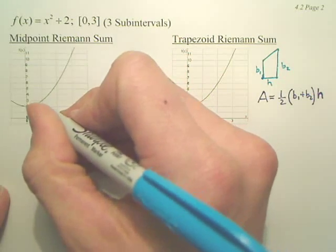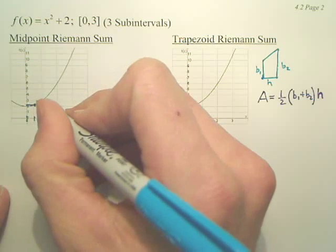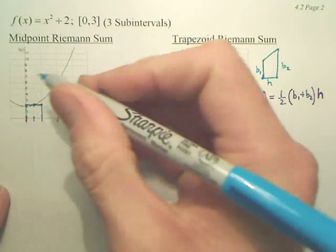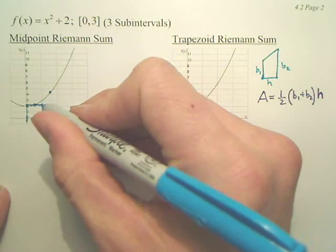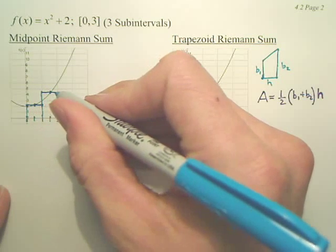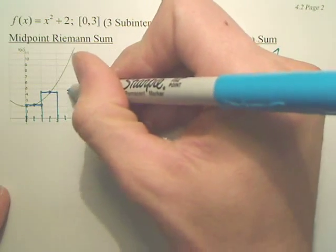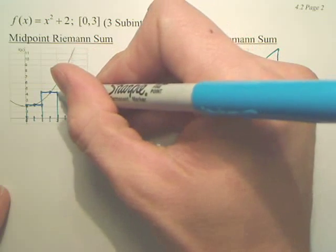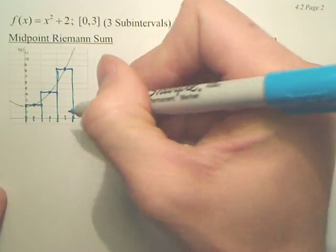So from here we go straight up and we make a rectangle. From here you go straight up, you make a rectangle. From here you go straight up, you make a rectangle.